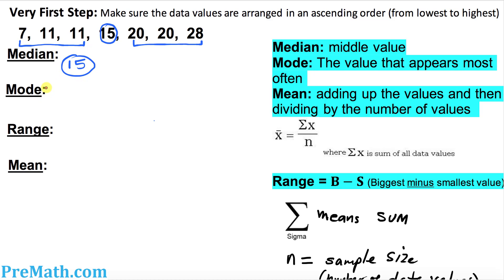So what is the mode? Mode is simply the values that show up the most number of times. Over here you can see 11 is showing up twice and 20 is showing up twice as well. So that means we have two modes: 11 and 20, and they are showing up twice.